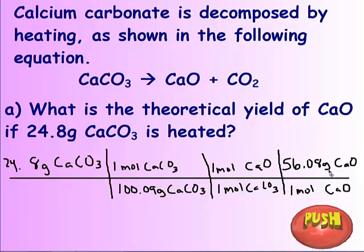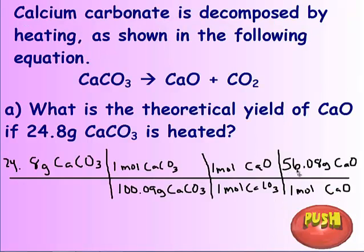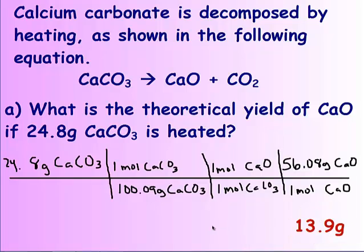And now I need to convert my moles to grams. This problem wasn't specific on converting it to grams, but if we look at the next problem it tells me that my actual was in grams, so I'm going to need to convert this one to grams anyway. On a test or quiz we'll be specific if we wanted grams, liters, or molecules. So multiplying and dividing, you should get 13.9 grams of calcium oxide.